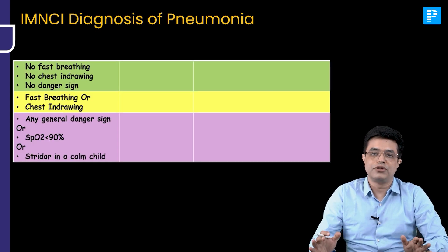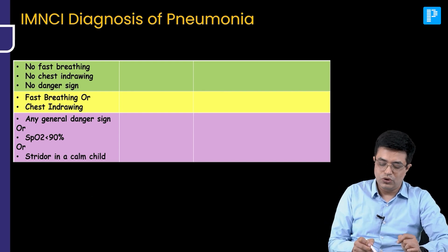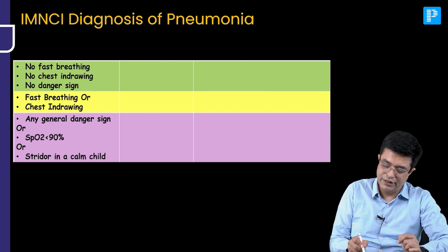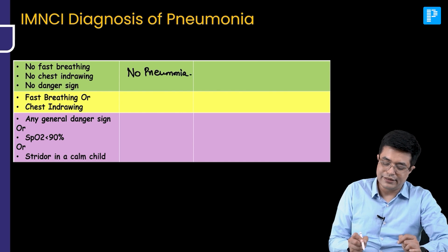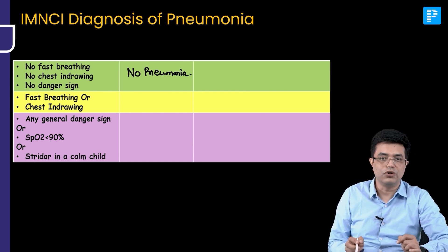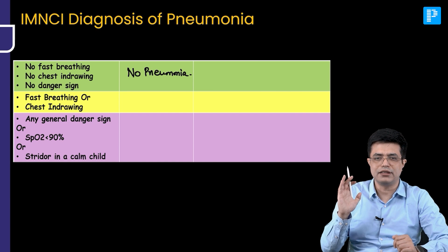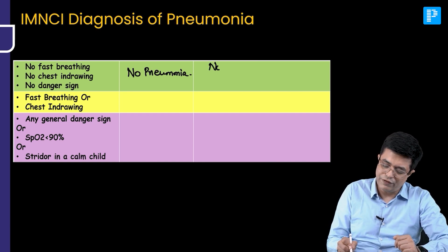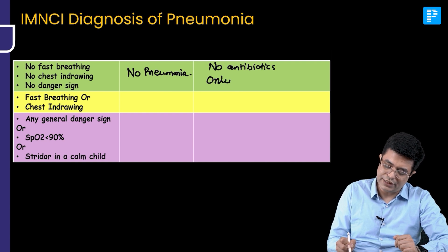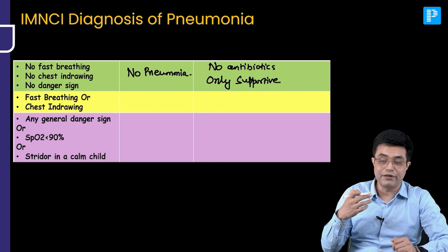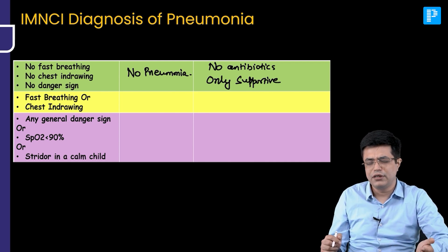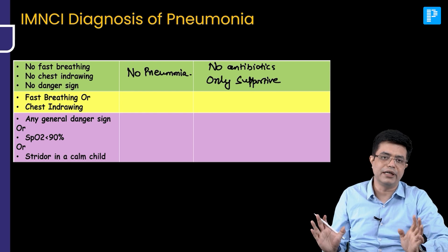Looking at the IMNCI classification table: if there is no fast breathing, no chest indrawing, and no danger sign, the child has no pneumonia — it is only cough and cold, coded green. No antibiotics should be given; only supportive therapy such as paracetamol for fever control and nebulized short-acting beta-agonist if wheezing is present. If there is fast breathing or chest indrawing but no danger sign, the patient has pneumonia, coded yellow. Oral antibiotics are used — the drug of choice is amoxicillin, given for 5 days. Review the patient in 2 days (48 hours) to assess improvement.